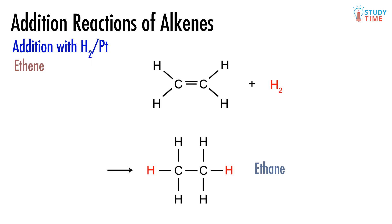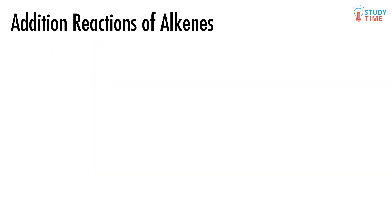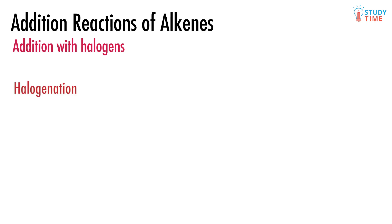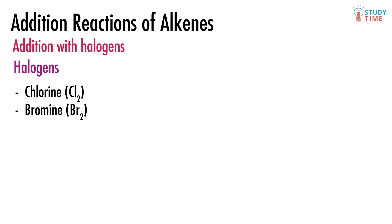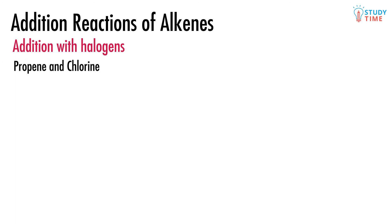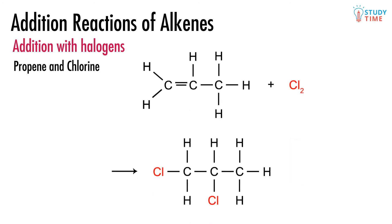When we react alkenes with halogens — halogenation — a similar thing happens. You simply switch the H atoms for halogen atoms. Halogens are things like chlorine and bromine, and no catalyst or special conditions are needed. Looking at the reaction of propene and chlorine, the final molecule we get is a haloalkane.